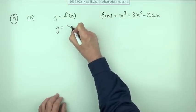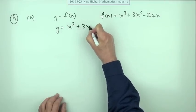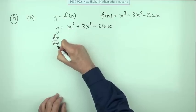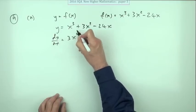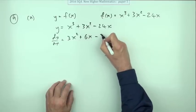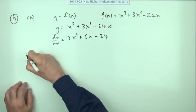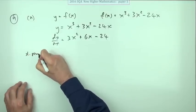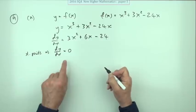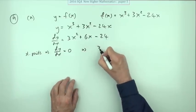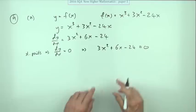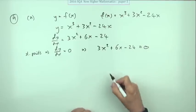You've got y equals x cubed plus 3x squared minus 24x. Differentiating that would give you, multiply by the power then reduce the power, 3x squared plus 6x minus 24. Let's talk about stationary points. Stationary points means that dy/dx should equal zero. You'll have to make that statement, which consequently means that 3x squared plus 6x minus 24 should equal zero.